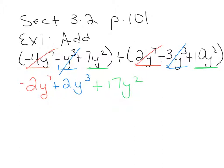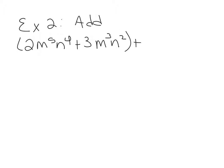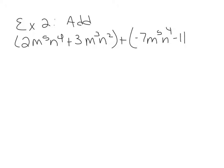Let's go to example 2: add the polynomials. So we have 2m to the 5th n to the 4th plus 3m cubed n squared, plus negative 7m to the 5th n to the 4th minus 11m cubed n squared. We still have a plus sign here, so we have a binomial plus another binomial. Now all of these variables look alike, but these are not all like terms. To be like terms, two terms have to have the same exact variables with the same exact exponents.